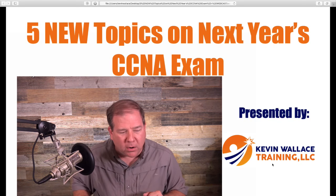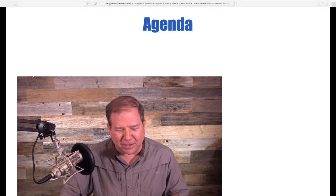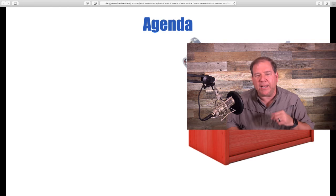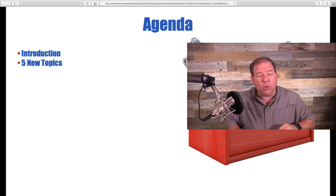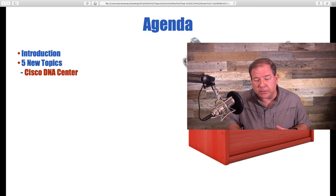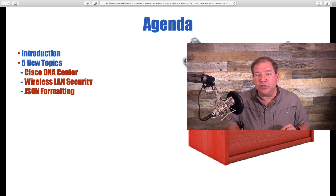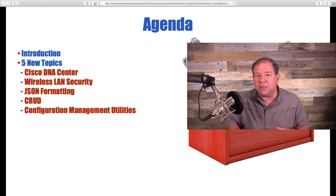Let's look at what's on the agenda for today. We're going to start with an introduction and some general observations about the new CCNA, then cover five new topics: Cisco DNA Center, Wireless LAN Security, JSON formatting, CRUD — which is a fun word to say — and three configuration management utilities: Puppet, Chef, and Ansible.